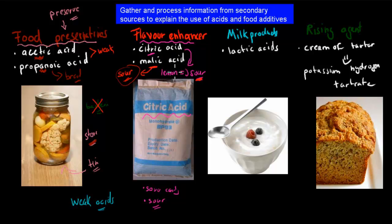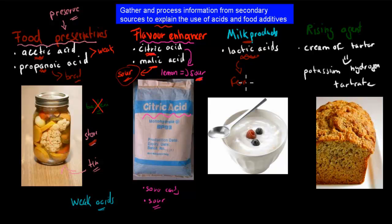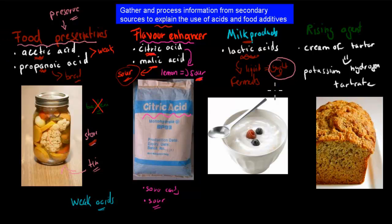Both citric acid and malic acid are used to enhance flavor — the explanation being that they make things more sour, which is a property of acids. We can also use lactic acid to make different types of milk products. Milk is a liquid, but by using lactic acid to ferment it, we can turn it from liquid milk into yogurt or cheese. Lactic acid ferments the milk, and since yogurt is a popular product, lactic acid is an important food additive.